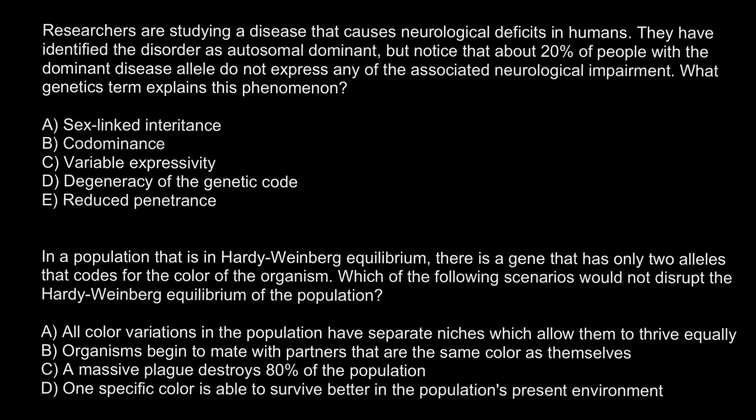Here is the first question: Researchers are studying a disease that causes neurological deficits in humans. They have identified the disorder as autosomal dominant, but notice that about 20 percent of the people with the dominant disease allele do not express any of the associated neurological impairment. What genetic terms explain this phenomenon? The answer variants are: sex-linked inheritance, co-dominance, variable expressivity, degeneracy of the genetic code, and reduced penetrance.